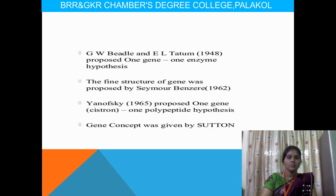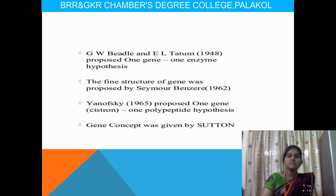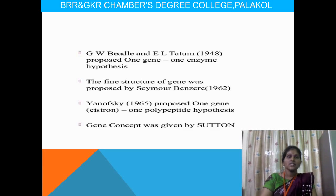Beadle and Tatum proposed the one gene one enzyme hypothesis in 1948. The fine structure of the gene was proposed by Seymour Benzer, who also described Recon, Muton, and Cistron. Yanofsky proposed the one gene one polypeptide hypothesis, and the gene concept was further developed by certain scientists.